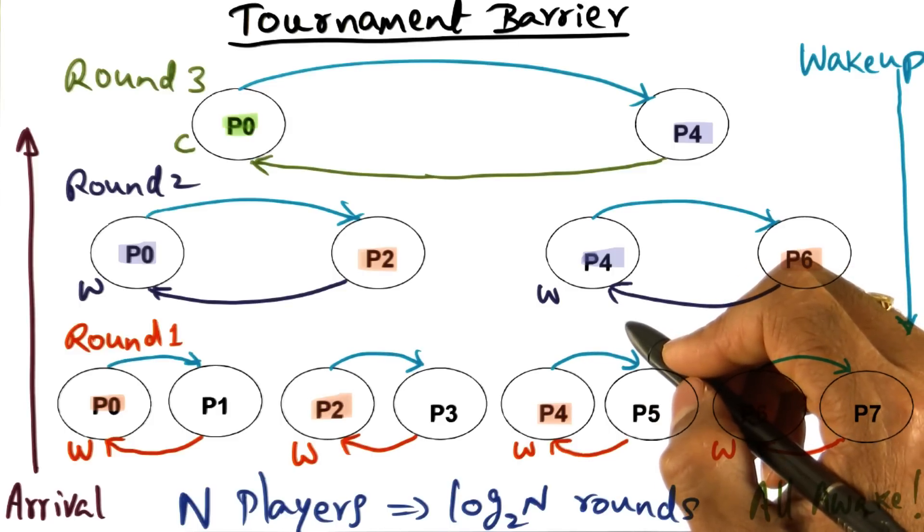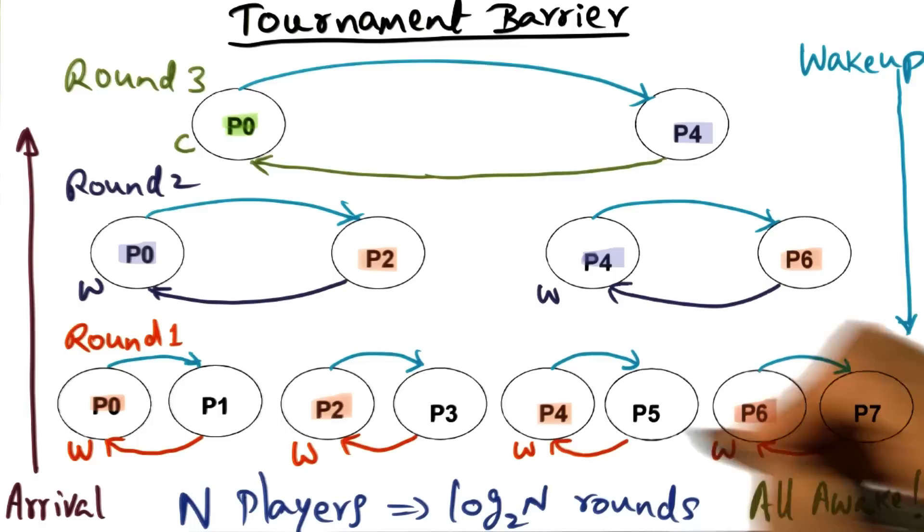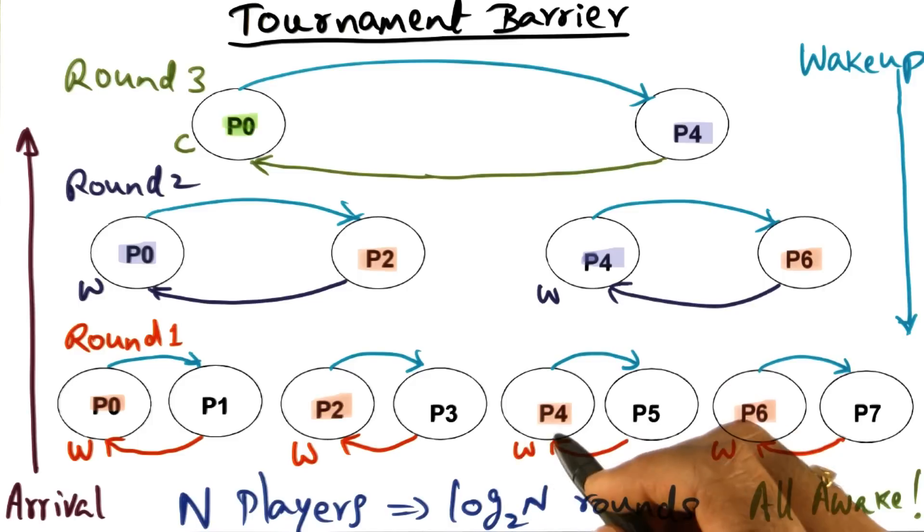Even if the multiprocessor is a cluster - by cluster what I mean is a set of processors in which the only way they can communicate with one another is through message passing. There is no shared memory, no physical shared memory. Even in that situation, the tournament barrier will work perfectly fine to implement the barrier algorithm.